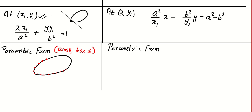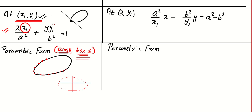If you plug in theta equal to 10 degrees, 20 degrees, 30 degrees, up to 360 degrees, you will be able to generate every point in the standard ellipse. Since the parametric form is a point on the ellipse, we can use the tangent formula with x1 = a cosθ and y1 = b sinθ, giving x/a cosθ + y/b sinθ = 1.